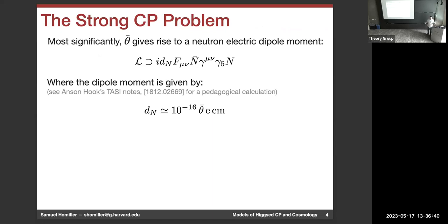Most significantly for phenomenological purposes, theta-bar gives rise to a neutron electric dipole moment. In the chiral Lagrangian at dimension five, there's a dipole term for the neutron coupled to an electromagnetic field with a dimensionful parameter D_N in front. You can derive how D_N approximately depends on the quark masses, the pion couplings and so forth — Anson Hooks' lecture notes from five years ago have a nice pedagogical derivation. It turns out D_N is roughly 10^{-16} e·cm times theta-bar.